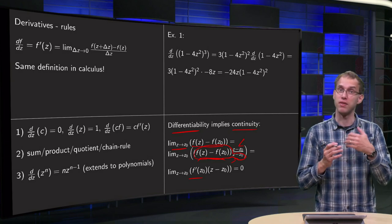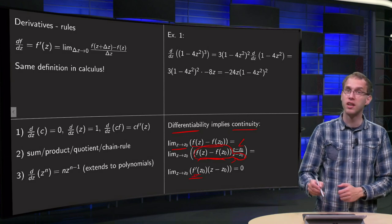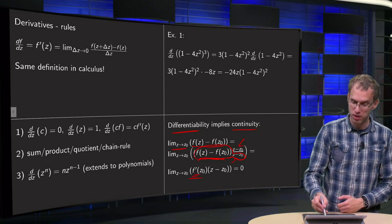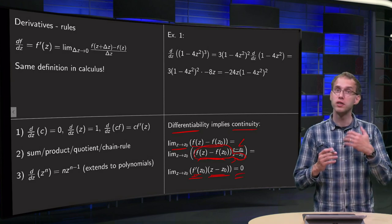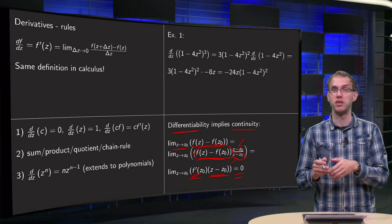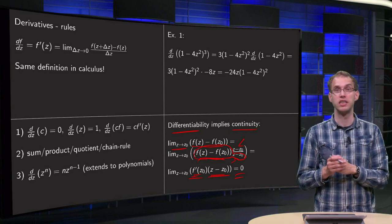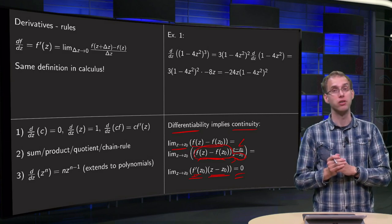Then this limit exists and the limit will be the product. The second part goes to 0, which means that the total limit equals 0, which means that lim(z→z₀) f(z) = f(z₀) and f is continuous at z₀. So differentiability is again stronger than continuity.